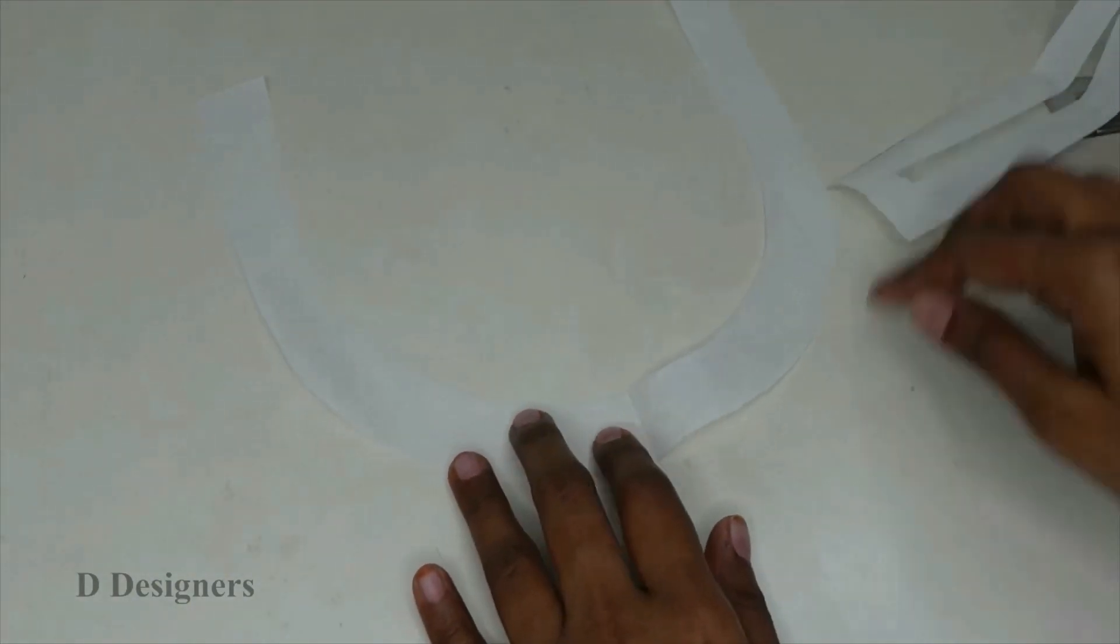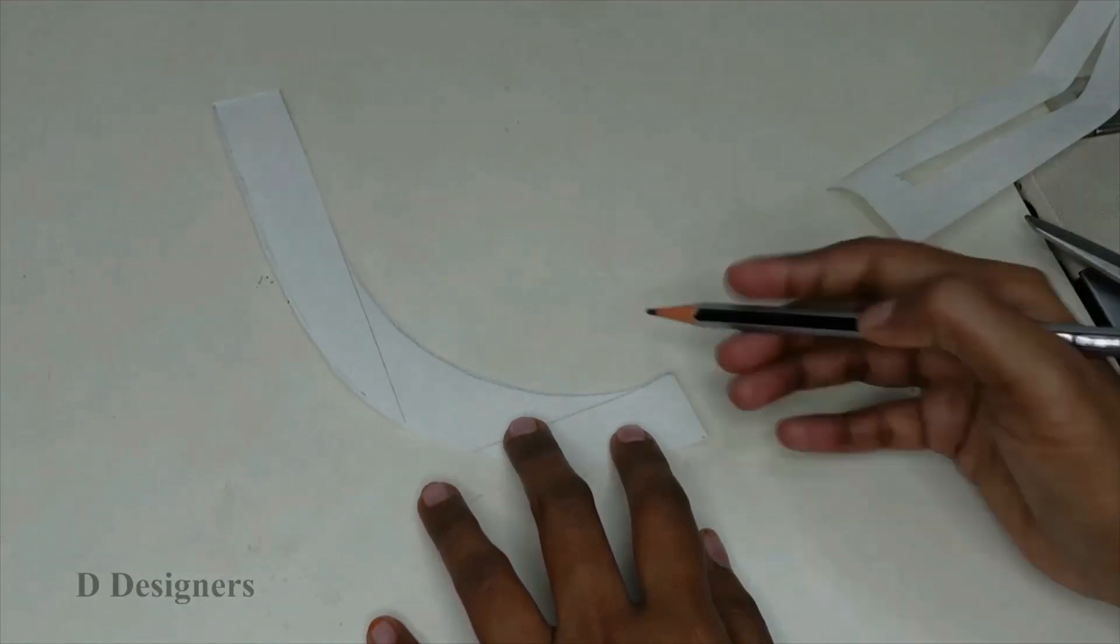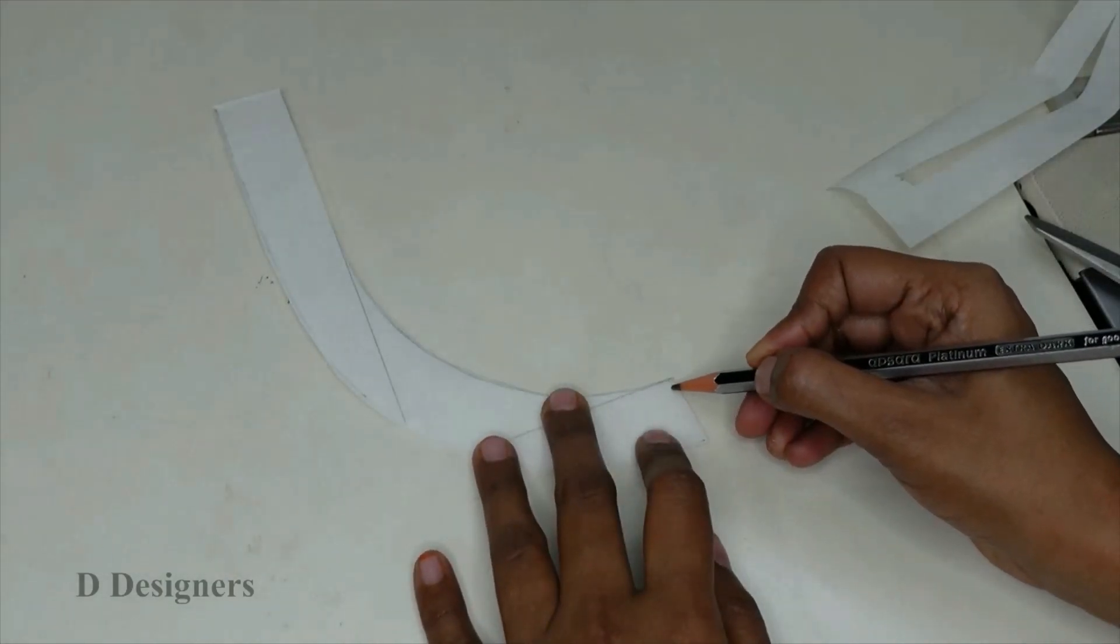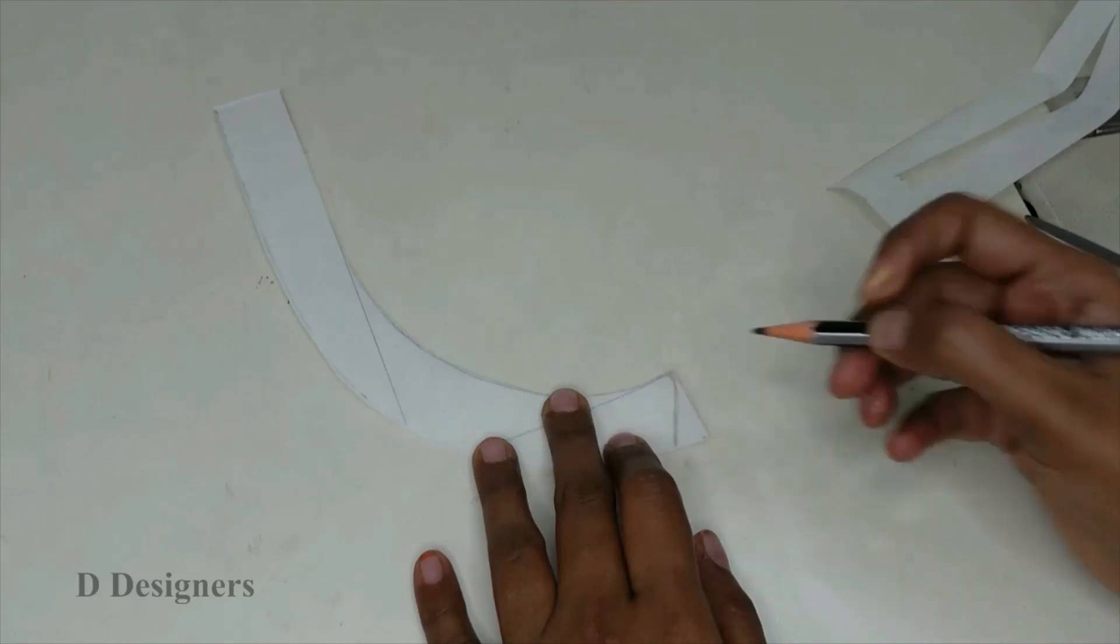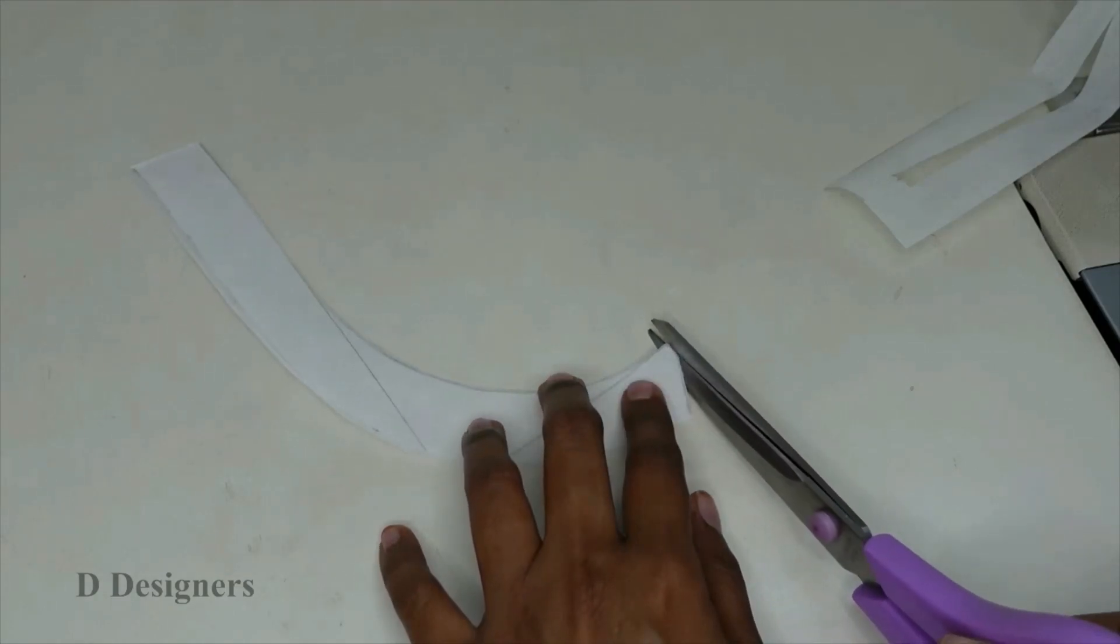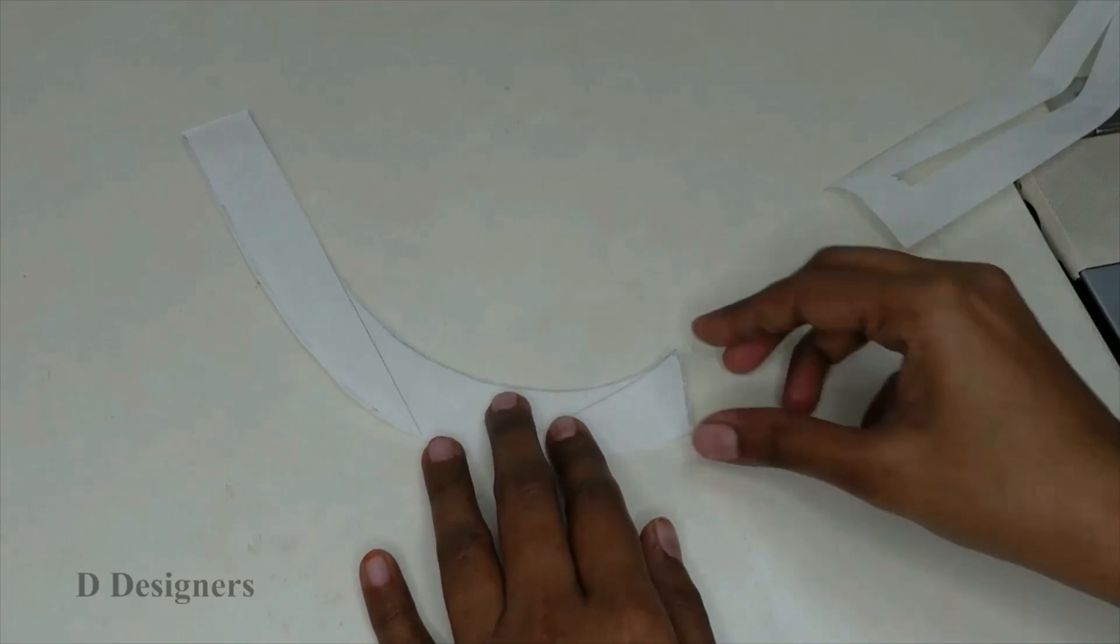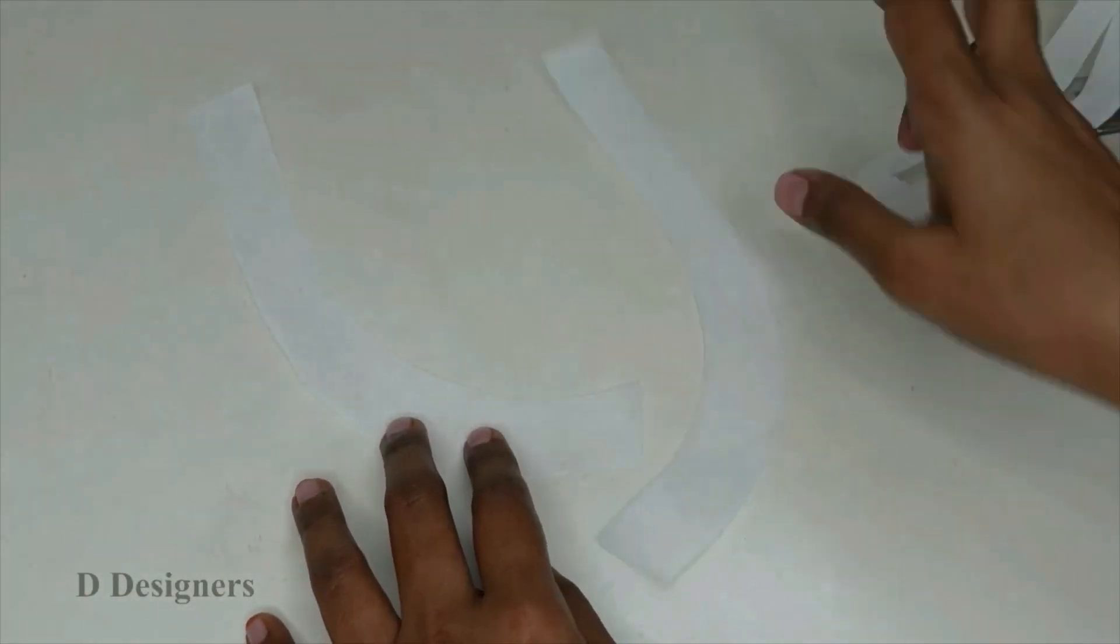For the first neckline I am going to give a shape. For that I am folding this. I am going to give a slit here. Now cut this shape. Now we have two pieces for the first neckline.